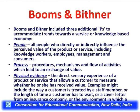The second additional P is process — procedures, mechanisms and flow of activities which lead to an exchange of value. The third additional P is physical evidence — the direct sensory experience of a product or service that allows a customer to measure whether he or she has received value. Examples include the way a customer is treated by a staff member, the length of time a customer has to wait, a cover letter from an insurance company, or the environment in which a product or service is delivered.